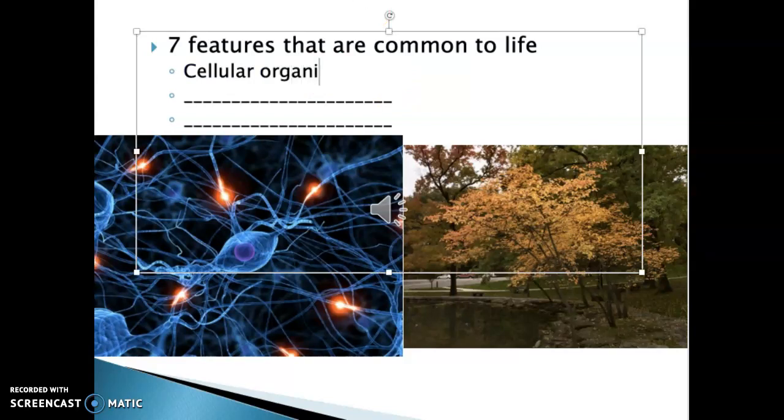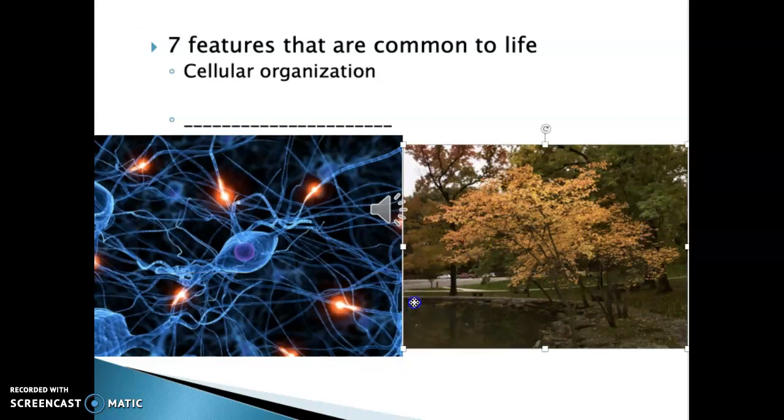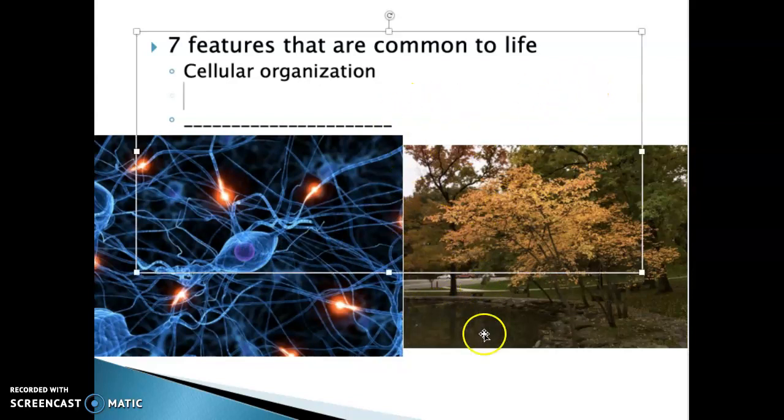First key feature, all life has cellular organization. It's organized at the cellular level. You can't get smaller than the cell and be considered a living organism. Now, this little structure here in the picture, this is a neuron. A neuron, incredible little structure, it's not living. It makes a cell function, but it's not technically considered living because it doesn't have enough of the key features.